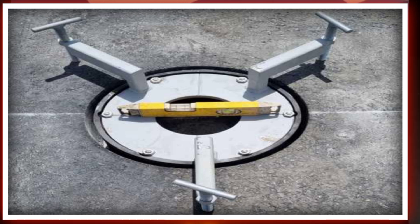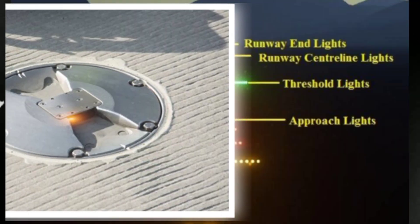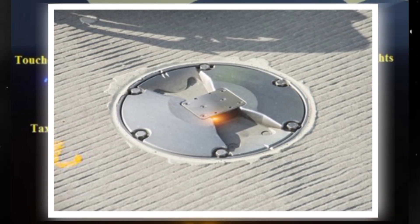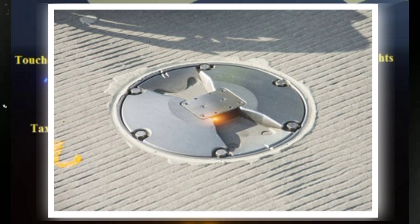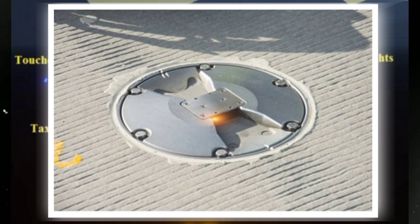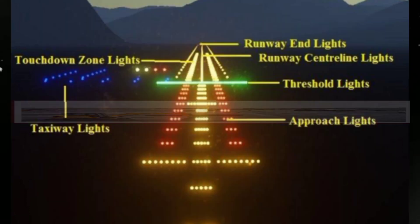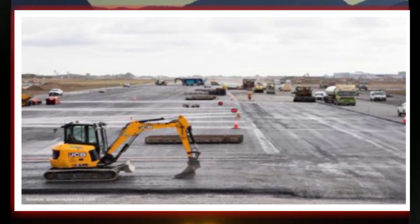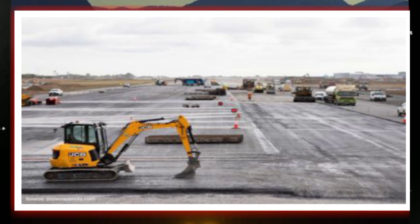Red and white light combination: each PAPI unit emits a beam of light with a specific color combination. When the aircraft is on the correct glide path, the pilot will observe two white lights and two red lights, indicating the aircraft is at the desired altitude and properly aligned for a safe landing. Indicator of deviation: if the aircraft is too high on approach, more white lights than red lights will be visible. Conversely, if the aircraft is too low, more red lights than white lights will be visible. This clear visual feedback helps pilots make immediate adjustments to correct their approach angle and ensure they remain on the correct glide path.